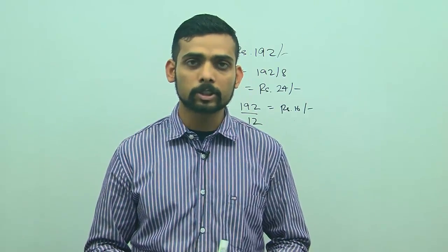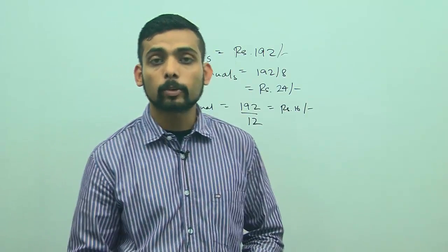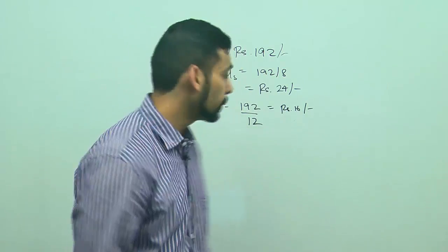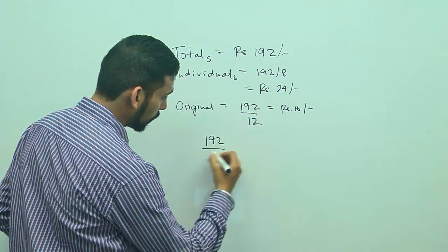For example, if I evaluate option B, 24 - so if 24 people go for the movie, spend of each person is going to be 192 divided by 24. This is going to give me rupees 8.